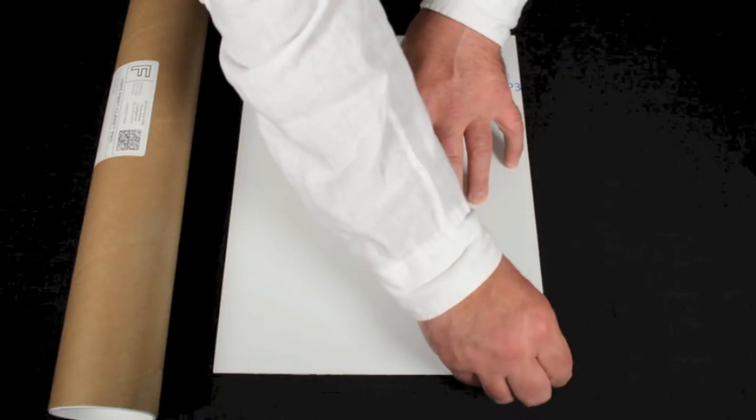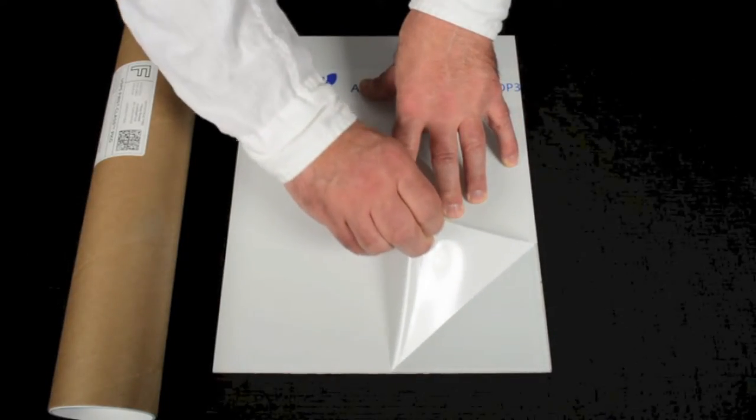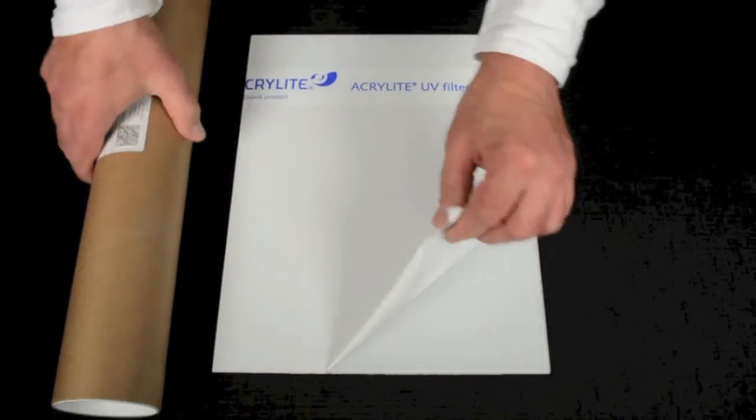The UV filtering glazing has a protective sheet on both the front and the back. To remove these sheets, start from a corner and simply pull it away from the glazing.